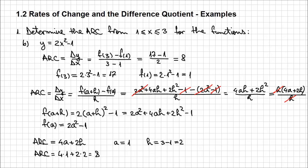You may wonder why we went to all these lengths for determining such a complicated thing. It's actually not that complicated, first of all. And the whole point of this course is to find the instantaneous rate of change. For that particular reason, this type of general expression is ideal. So I'm going to write it here in a corner so we don't forget it: the average rate of change we determined is 4a plus 2h.